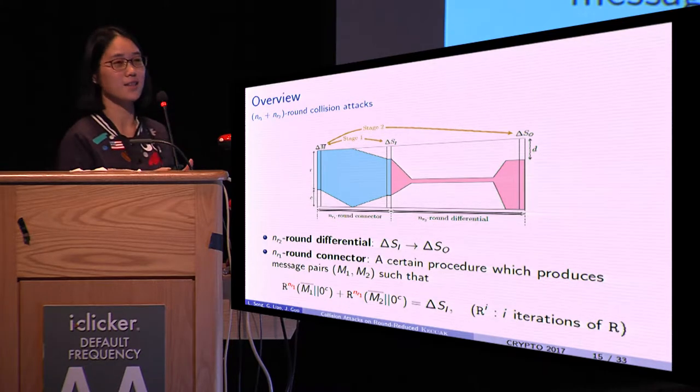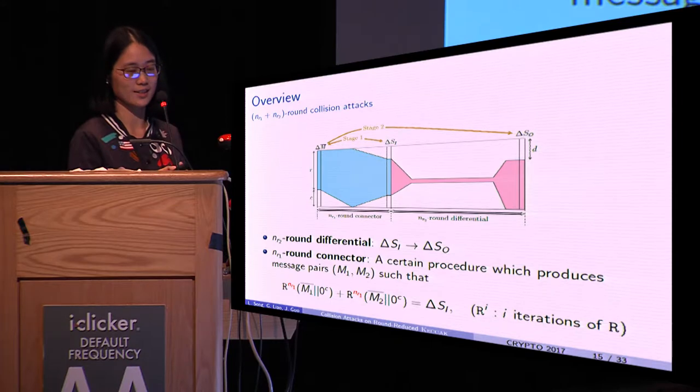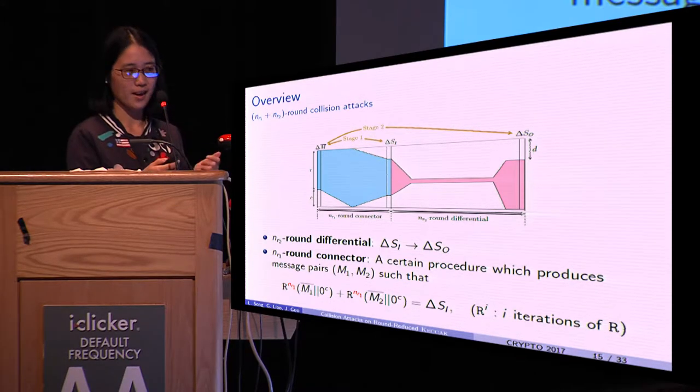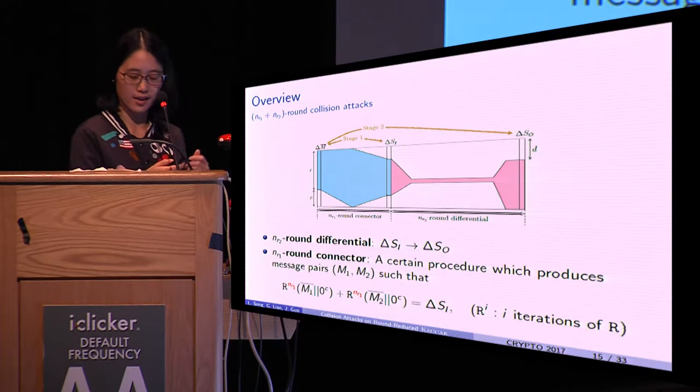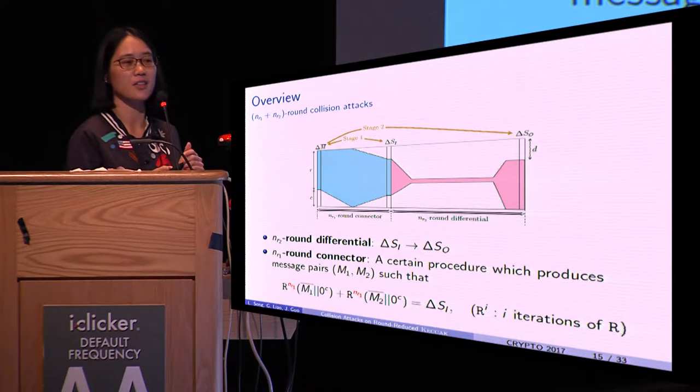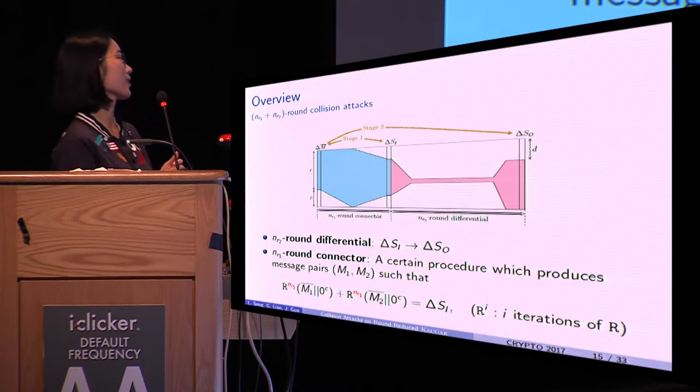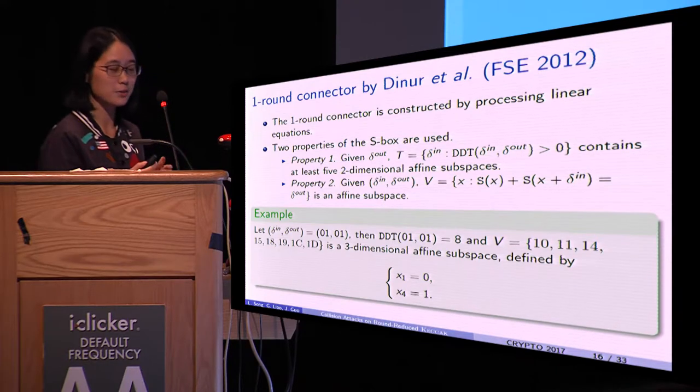Suppose the NR2-round differential trail has input difference ΔSI and output difference ΔSO. Then the NR1-round connector is a procedure which produces message pairs M2 and M1 such that the difference after NR1 rounds is exactly ΔSI.